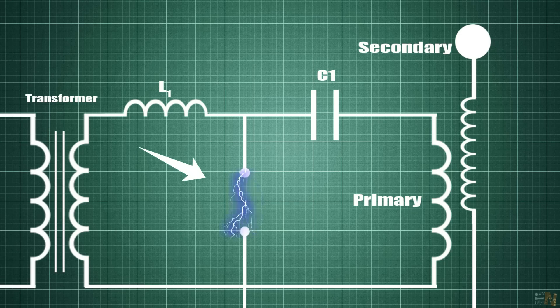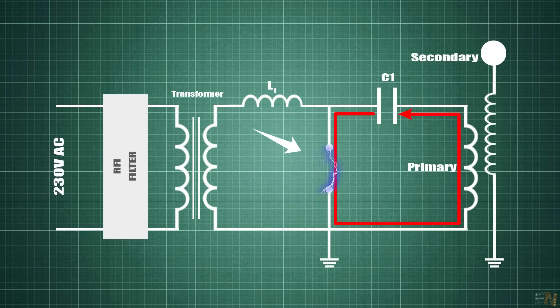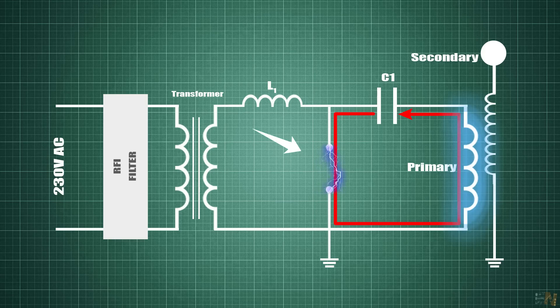When the arc is formed, a current change will be created through the primary winding of the Tesla coil. That will create a magnetic flux that will induce current in the secondary, so a voltage drop is created.